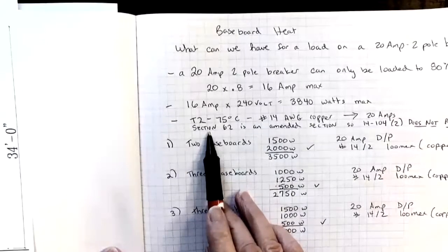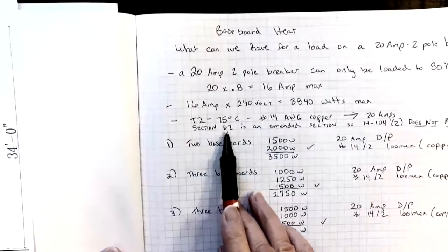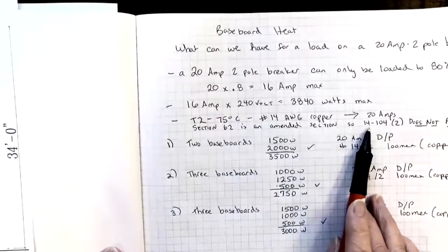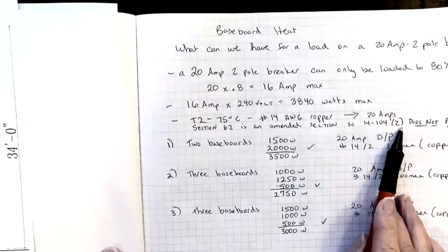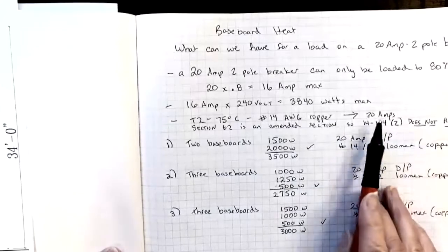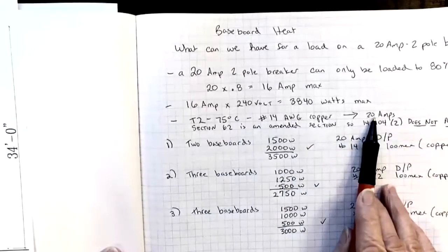In a previous video I talked about what an amended section means. Section 62 is an amended section. So that means that the rule in 14-104 does not apply. In other words, we can put a 20 amp breaker on this number 14 copper wire.